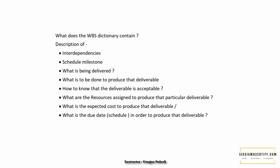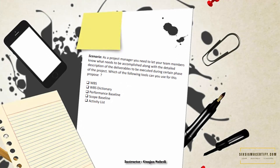Here is a question: as a project manager, you need to let your teams know what needs to be accomplished along with the detailed description of the deliverables to be executed during a certain phase of the project. Which of the following tools can you use for this purpose? The options are: WBS, WBS dictionary, performance baseline, scope baseline, or the activity list. Take a moment to think about the answer.